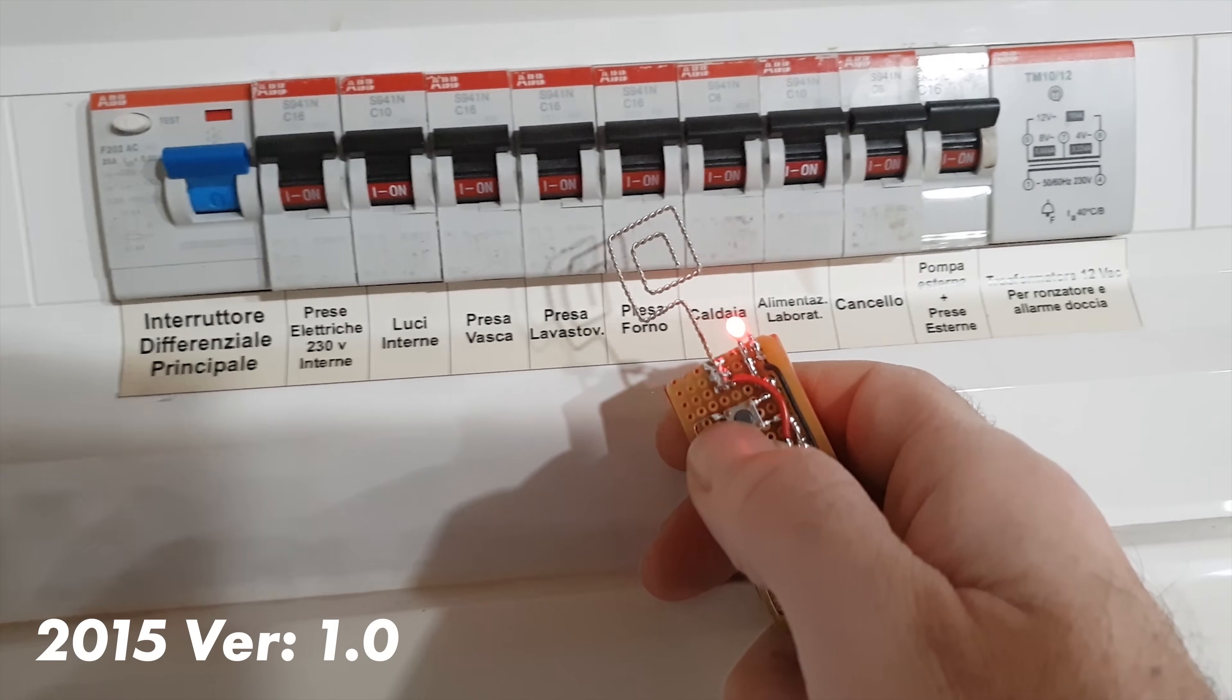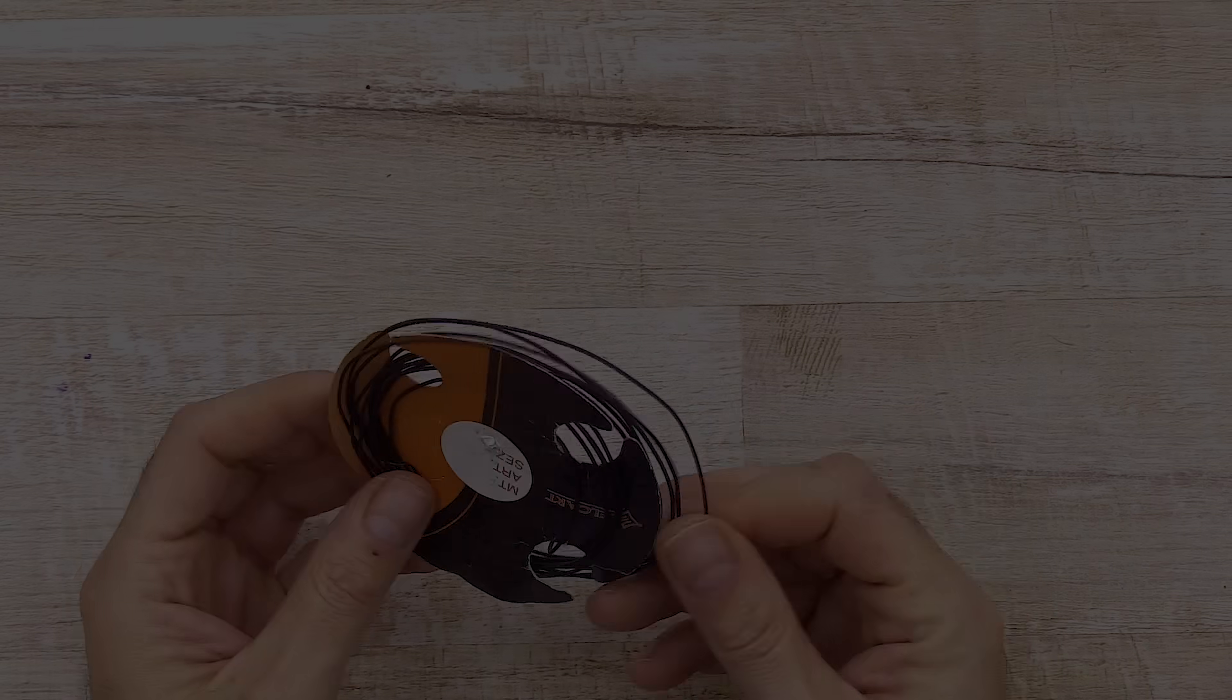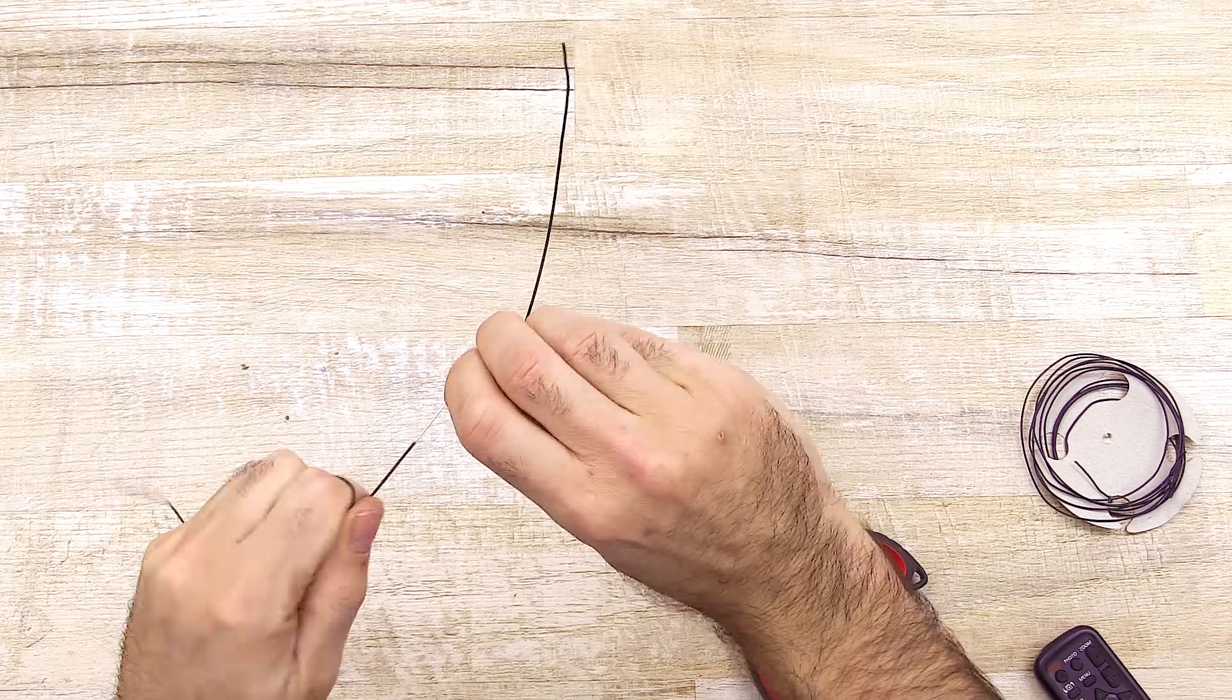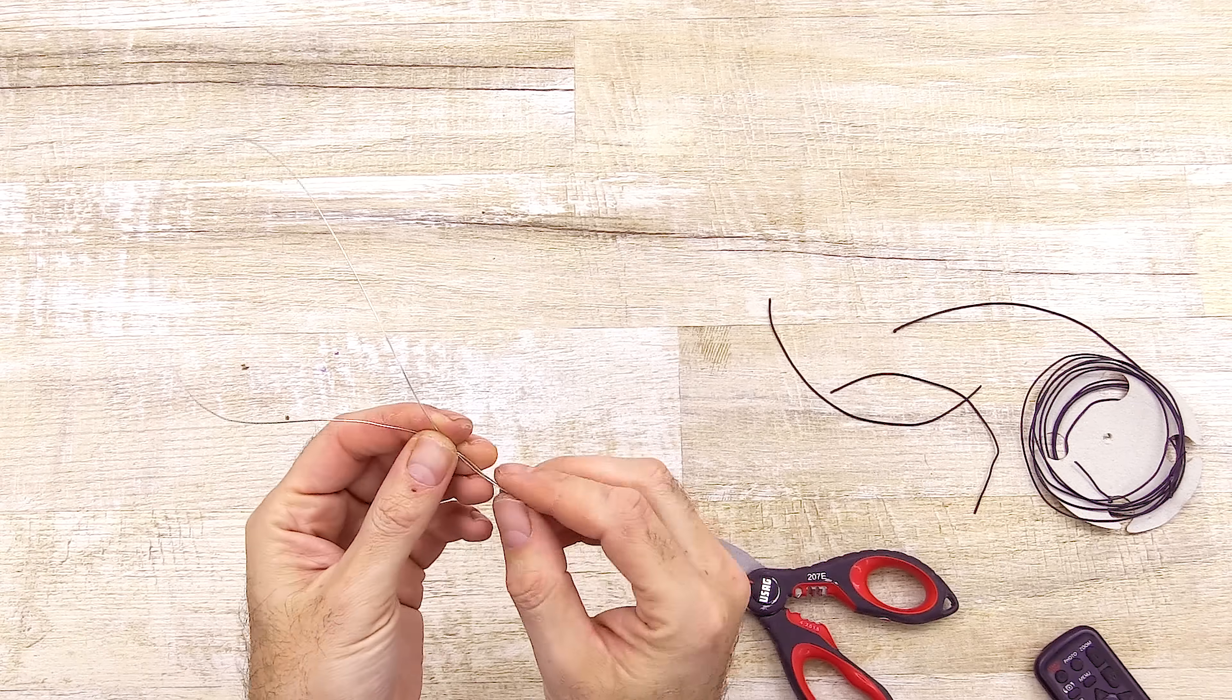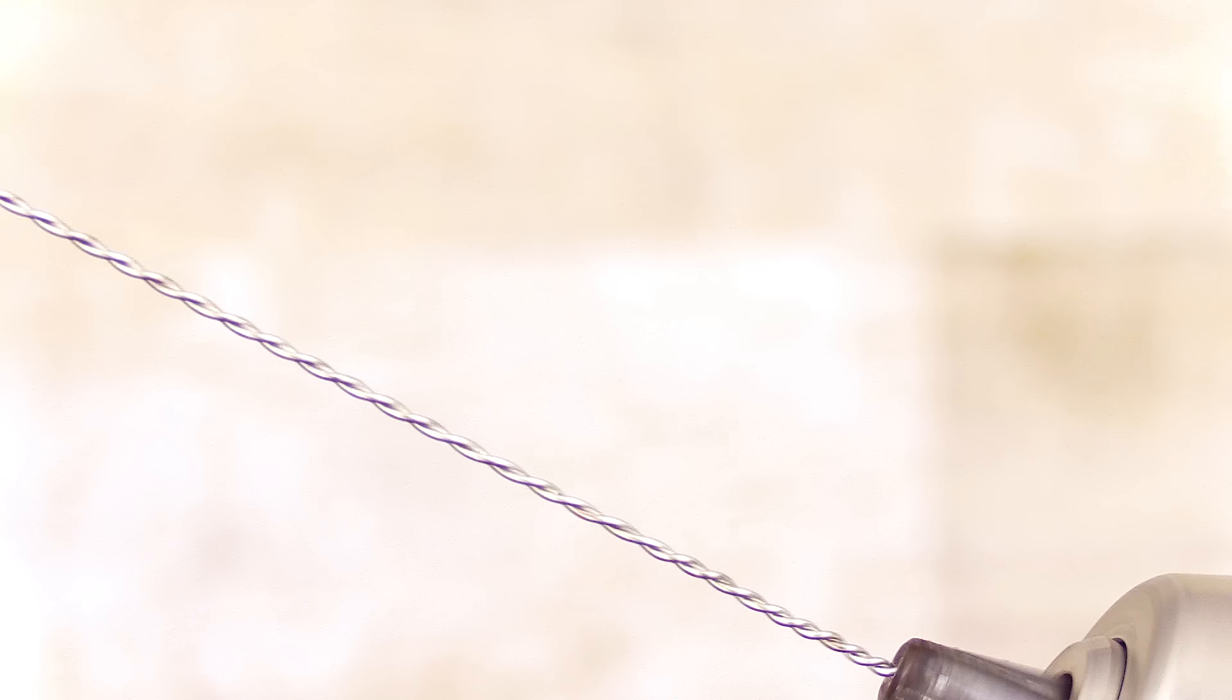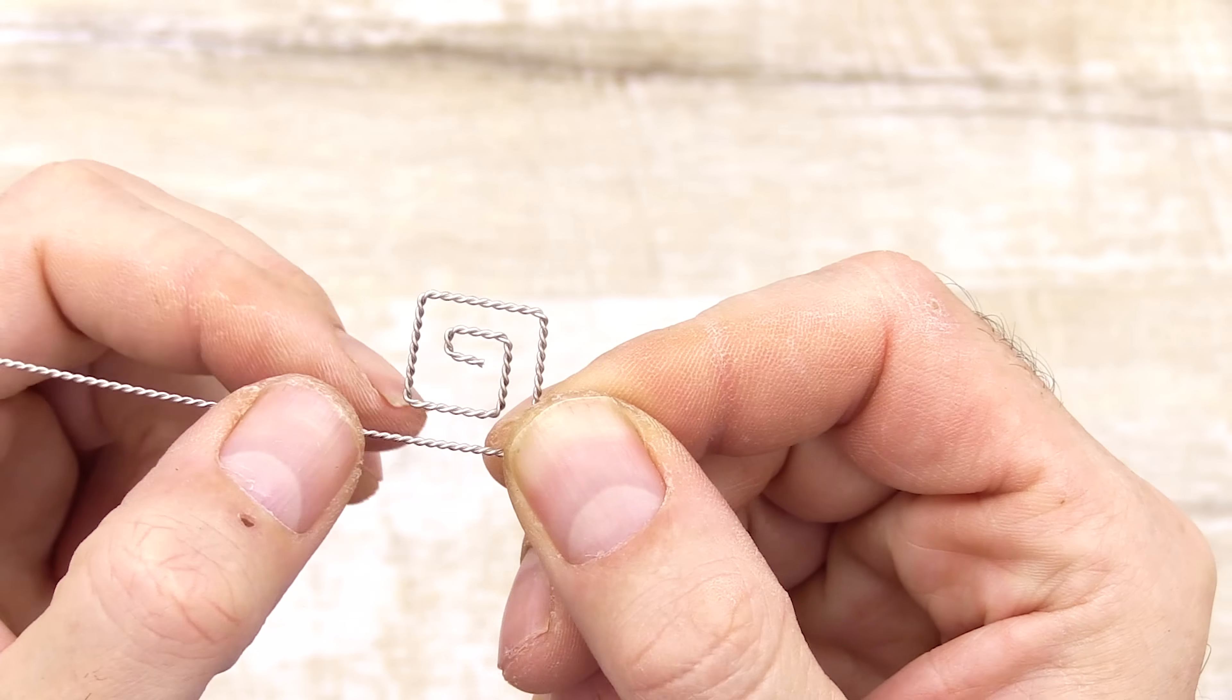In this video, I'll show you how I built two types of tools for detecting live electrical wires inside walls. I start by building a custom antenna made from tinned copper wires. Don't worry about the shape. It's purely aesthetic. You can also make it in a round spiral form. It will work just as well.